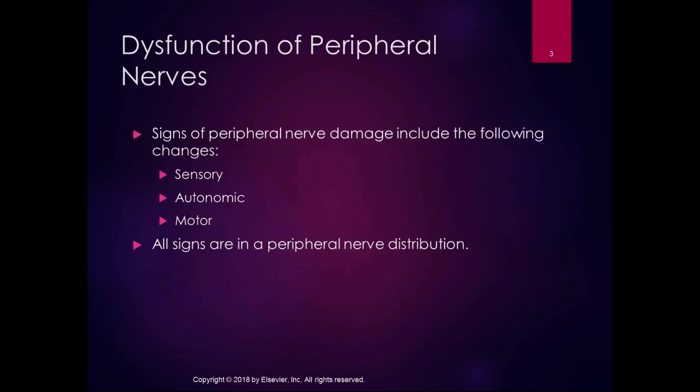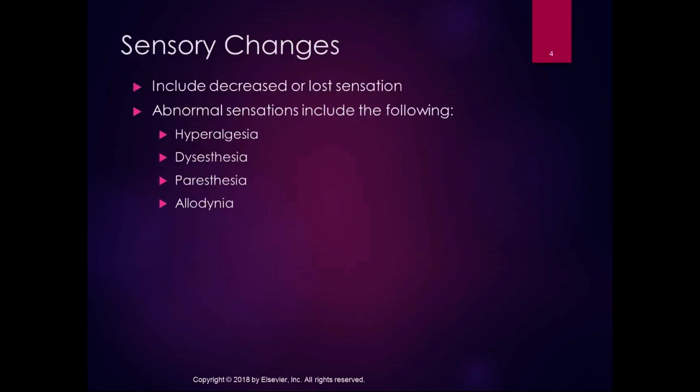The signs of peripheral nerve damage can include sensory, autonomic, and motor damage. All symptoms are going to show up in a peripheral nerve distribution — not a dermatome or myotome distribution. Sensory changes include decreased or lost sensation, and abnormal sensations like hyperalgesia, dysesthesia, paresthesia, and allodynia — things don't feel right, and sensations that wouldn't ordinarily be painful become painful.